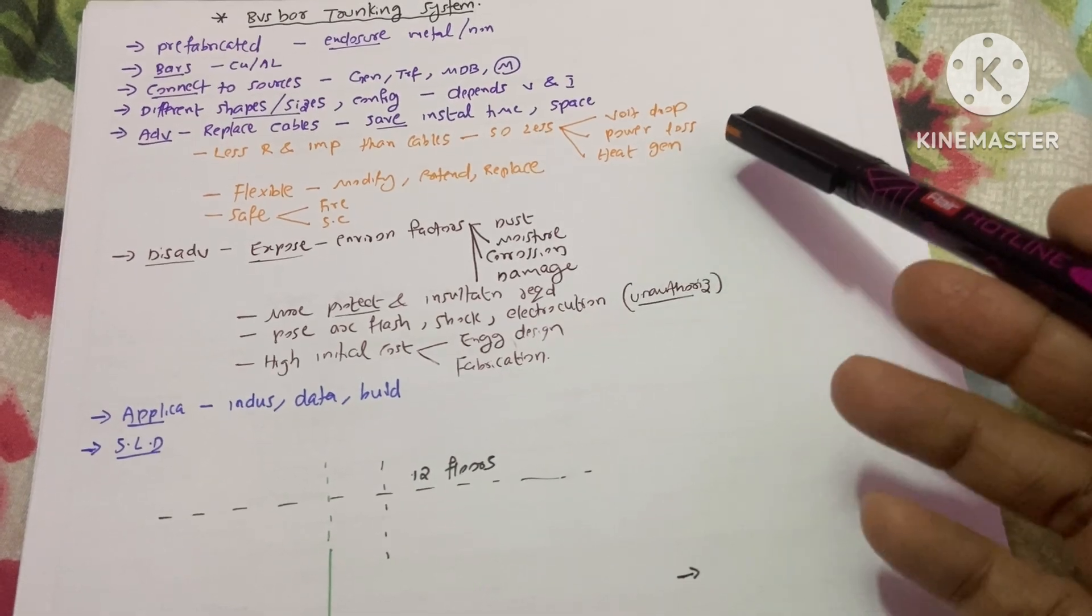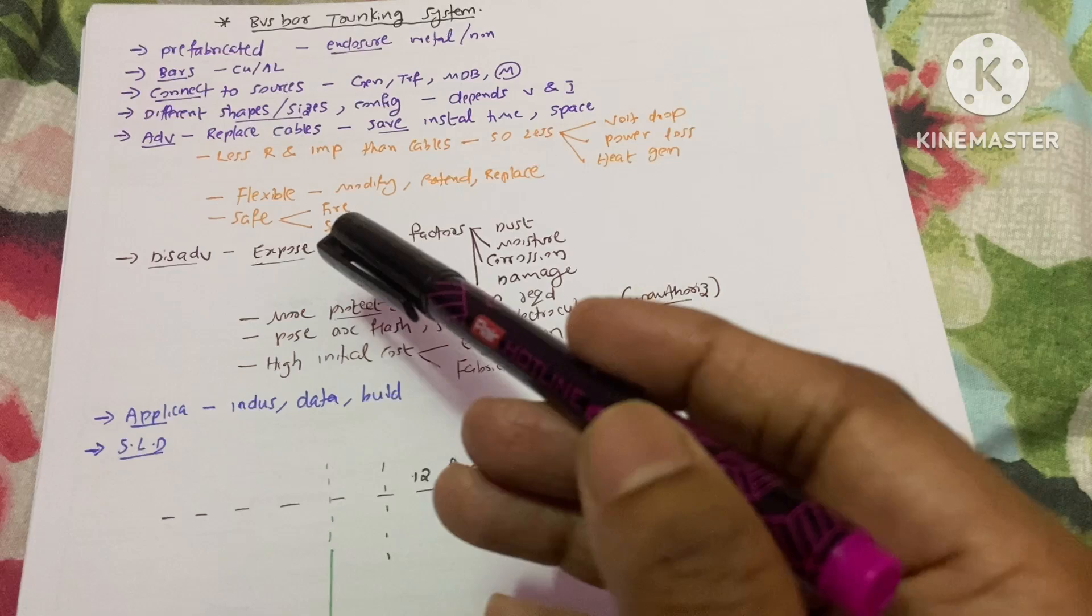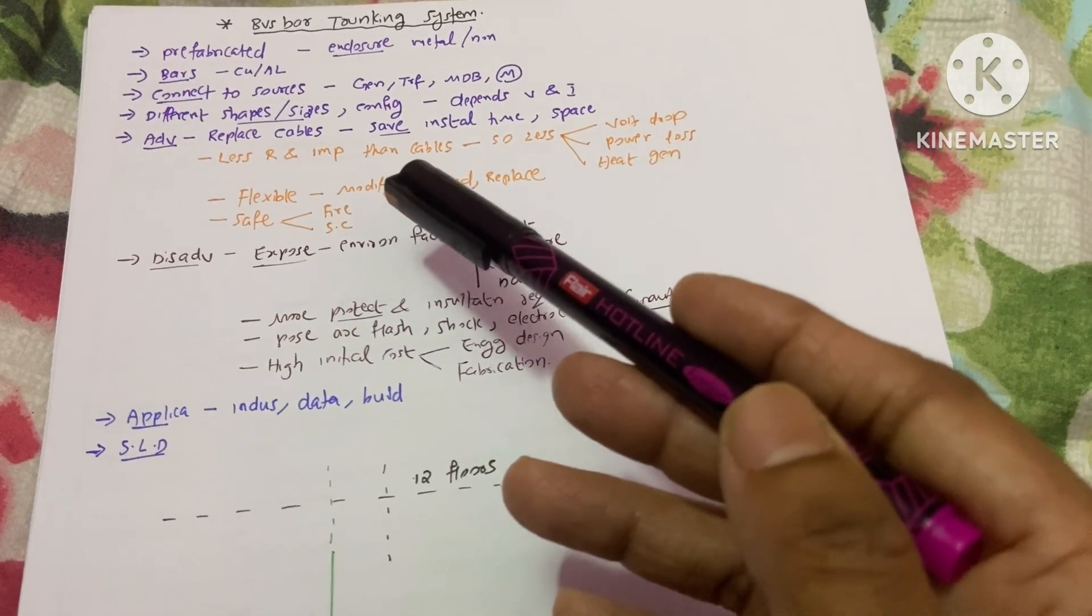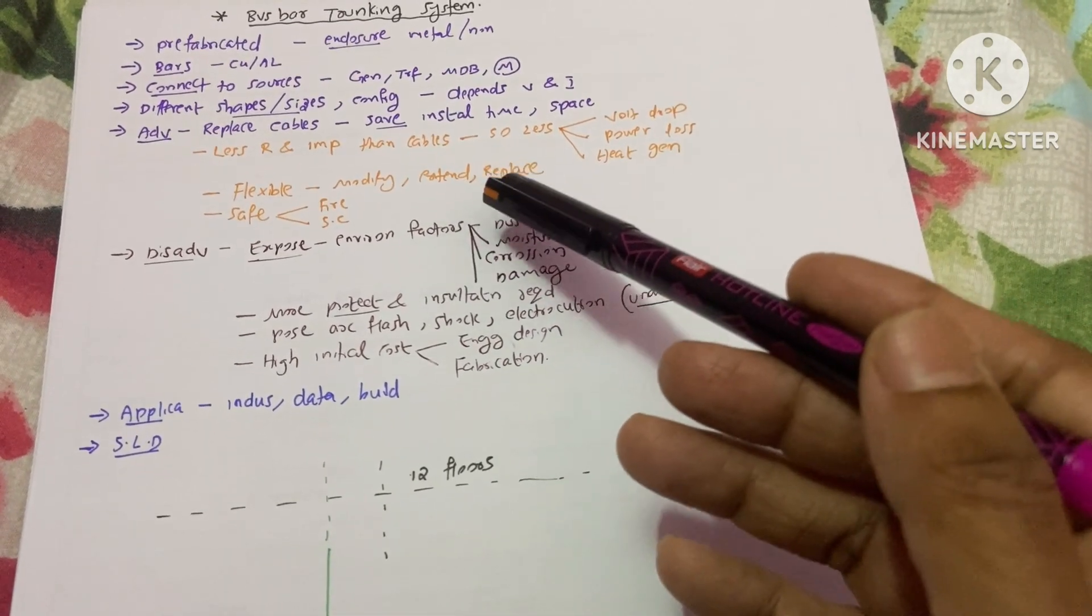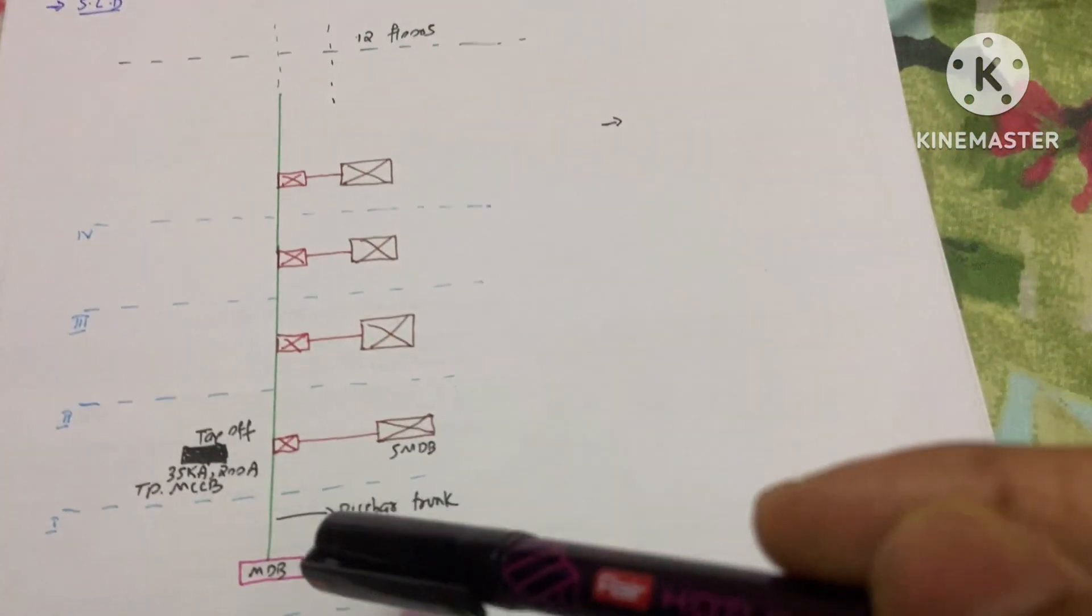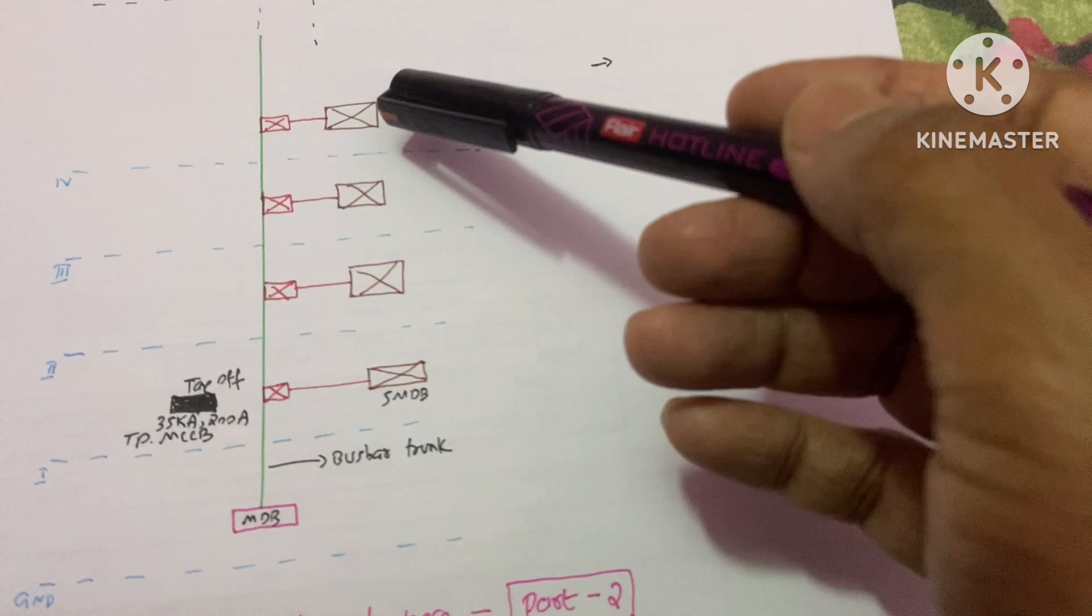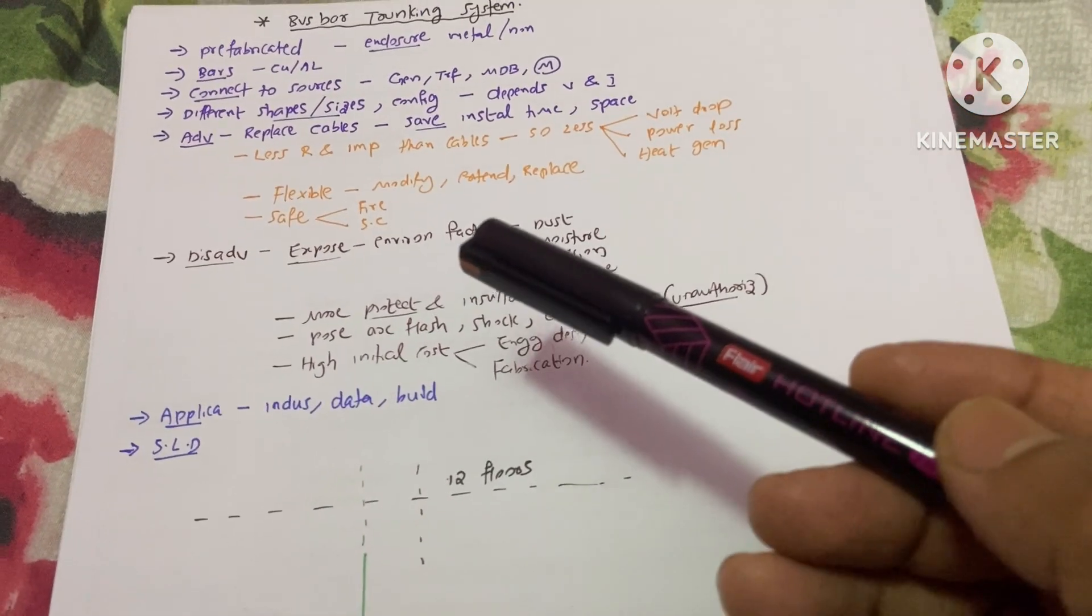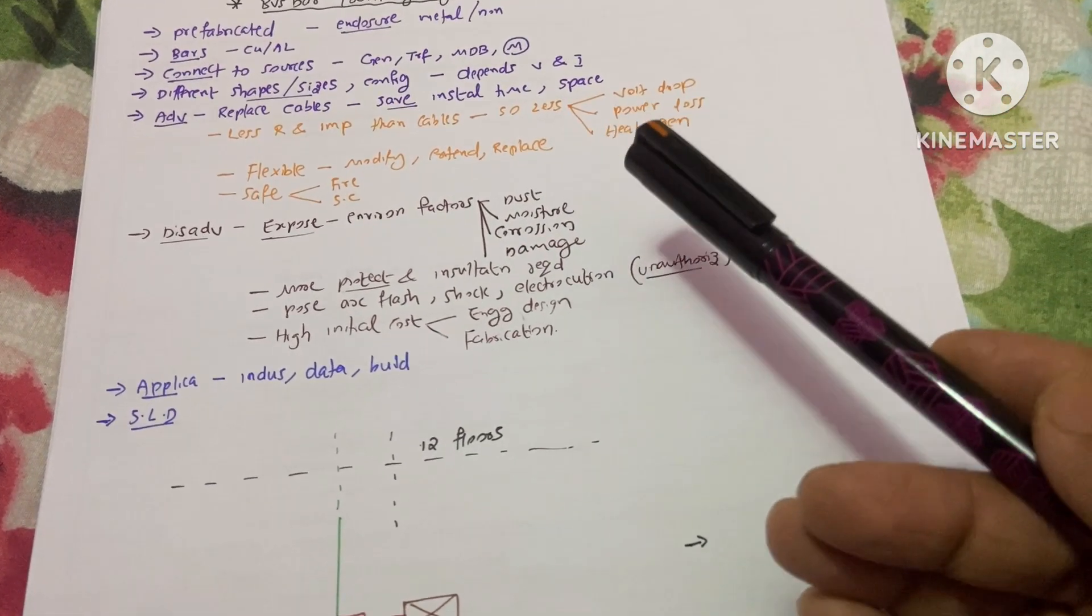The next one is the flexibility of the system. You can modify your bus bar trunking system at any time, and you can also extend it. Suppose you first installed your bus bar trunking system up to 10 floors—later on, if you want to extend this to two more floors, you can extend it easily. You can also replace damaged bus bar trunking system components.